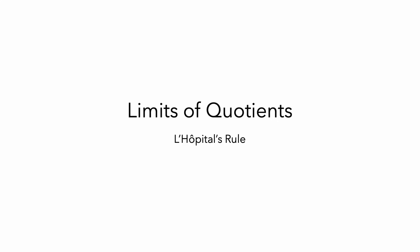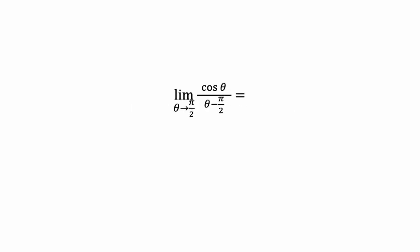In this video, I'll introduce L'Hôpital's rule as a method to find limits of quotients. Here is the limit as theta goes to pi over 2 of cosine theta divided by theta minus pi over 2.